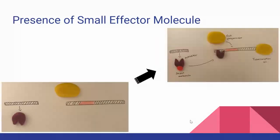However, when a small molecule is present, it will bind to the activator protein binding site. This will alter the protein shape, allowing it to bind to the regulatory sites upstream from the promoter. As a result, RNA polymerase is now able to bind to the promoter region and initiate transcription. Therefore, transcription is turned on.